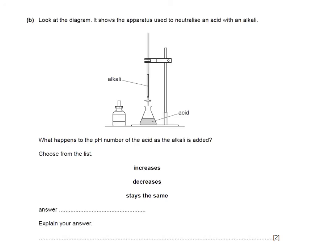Here's another question. It says, look at the diagram. It shows the apparatus used to neutralise an acid with an alkali. What happens to the pH number of the acid as the alkali is added? Well, here we're starting with the acid in the flask, which will have a low pH. And we're adding an alkali from the burette, which will have a high pH. So the pH of the acid will increase as we add alkali to it until it becomes 7. And the reason is we are adding alkali, which has a higher pH.